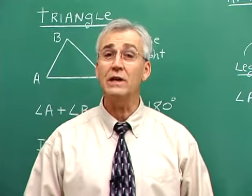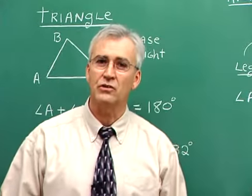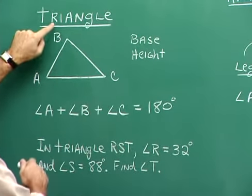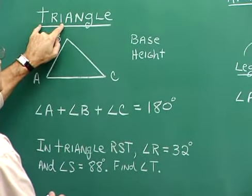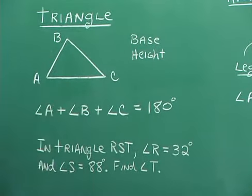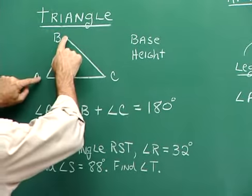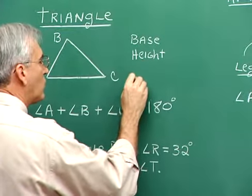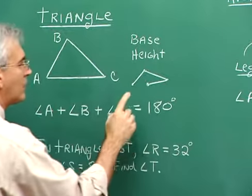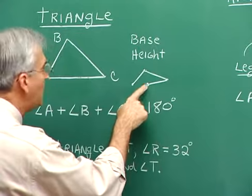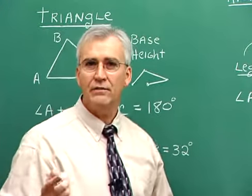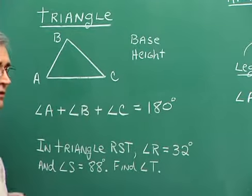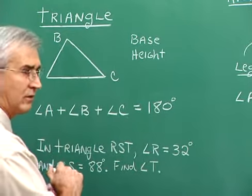A triangle is defined as a closed, three-sided plane figure. It has three sides and three angles — the prefix tri means three, hence triangle means three angles. The closure means the endpoints of all sides join with one another; without closure a figure has no defined inside or outside. A triangle is a plane figure because it lies in one plane and can be drawn on a flat surface.